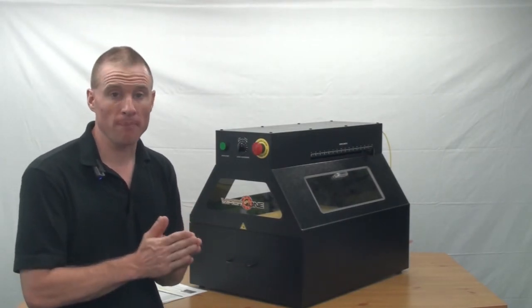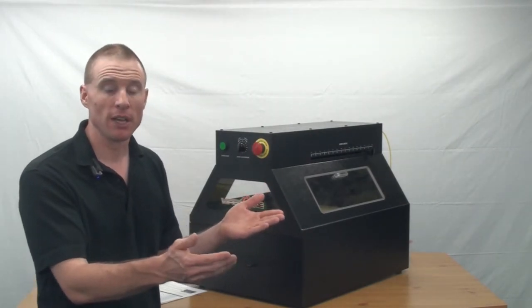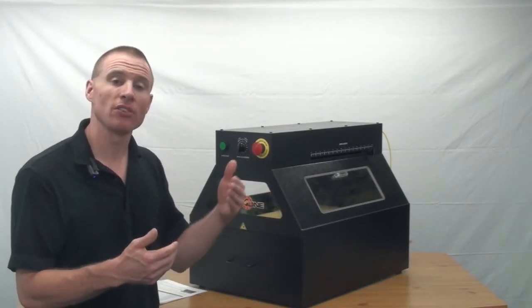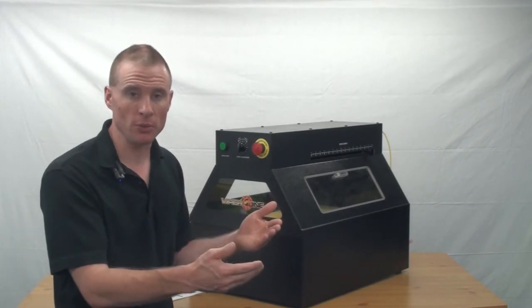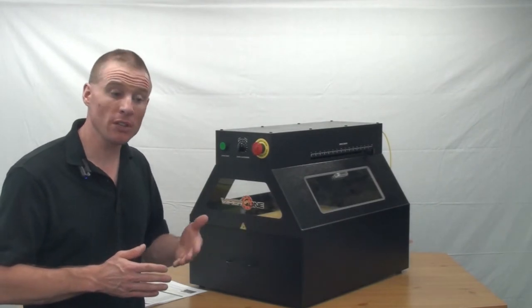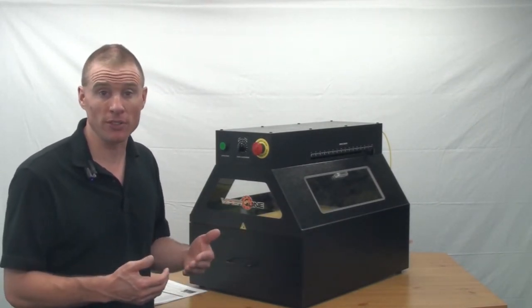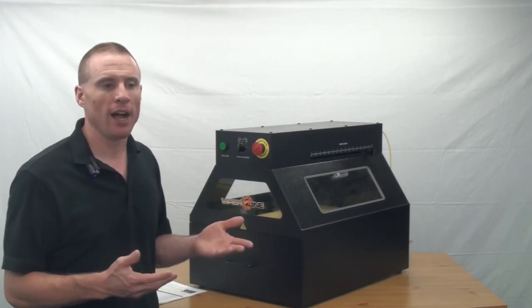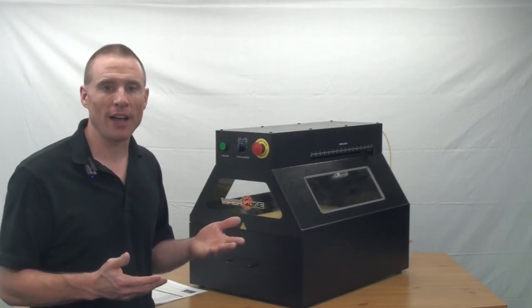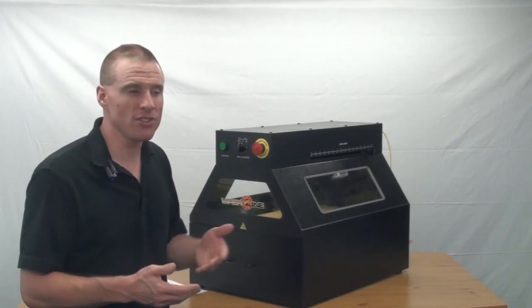The general rule of thumb is the darker the shirt, the more pre-treatment you're going to need. The heavier weight the shirt, generally the more pre-treatment you'll need. On the other hand, conversely, if you're using a lighter colored garment, you can lay down less pre-treatment, as well as a lighter weight garment like, say, a four or five or five and a half ounce shirt.